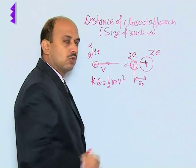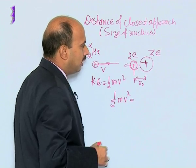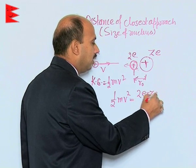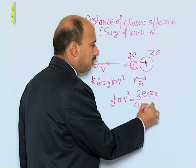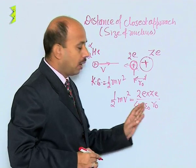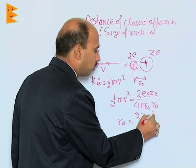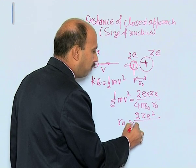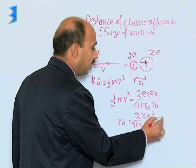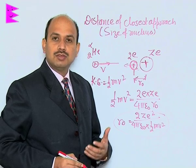The charge of the alpha particle is 2e, so we can write: ½mv² = 2e · ze / (4πε₀r₀). This r₀ is known as the distance of closest approach, and r₀ can be written as 2ze² / (4πε₀ · ½mv²). So this is the distance r₀, called the distance of closest approach.